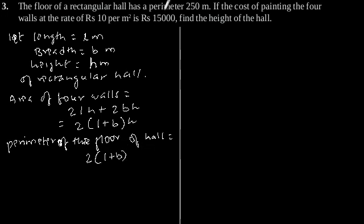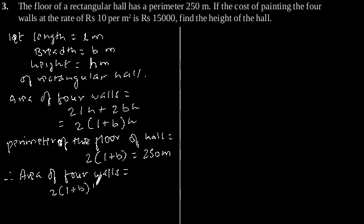It is given in the question is equal to 250 meters. Therefore area of 4 walls is equal to 2 into L plus B into H, which equals 250 into H meters. Since 2 into L plus B is equal to 250 meters.